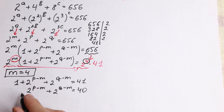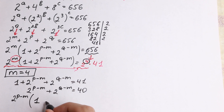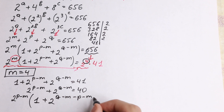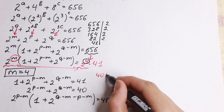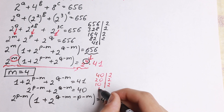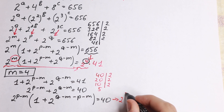Now I suggest factoring out 2 to the power p minus m. If we factor it out, we get 2 to the power p minus m, times the quantity 1 plus 2 to the power q minus m minus (p minus m), equals 40. Now let's express 40 as a power of 2: dividing by 2 repeatedly, 40 → 20 → 10 → 5, so 40 equals 2 cubed times 5.